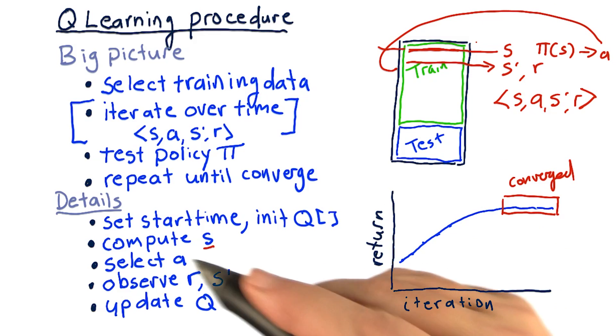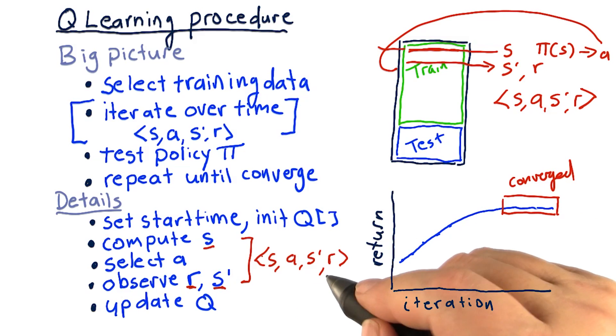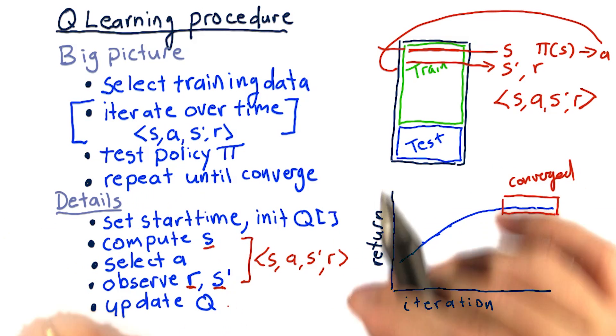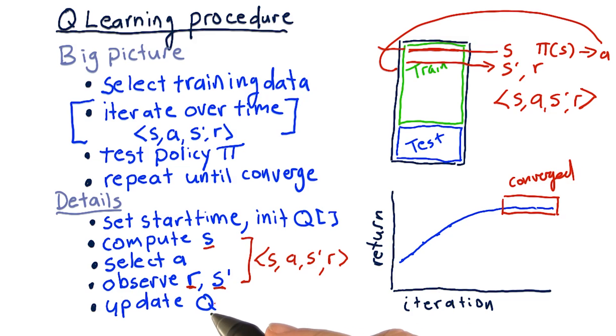Then we step forward and we see what reward we get and what's our new state. We now have a complete experience tuple that we can use to update our Q table. So we take this information that we just learned, and we improve Q based on that information.